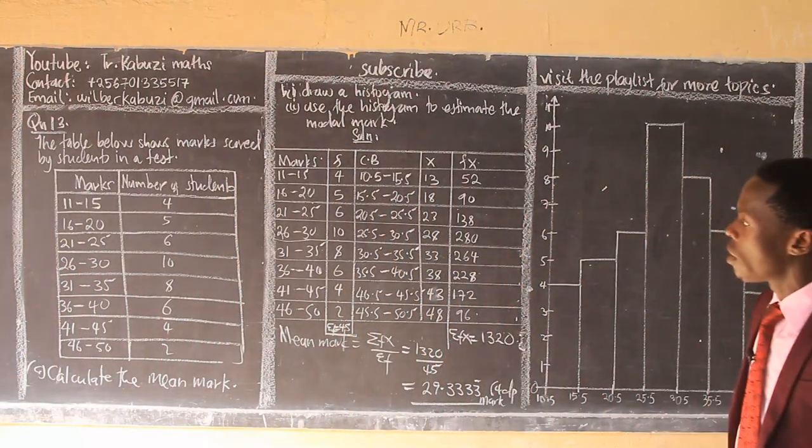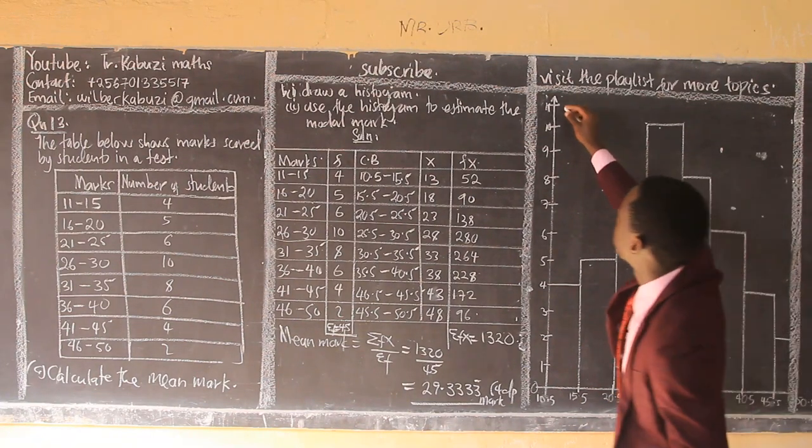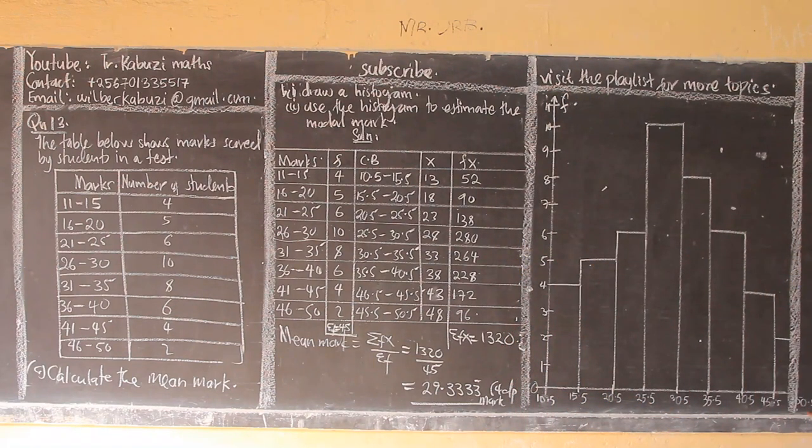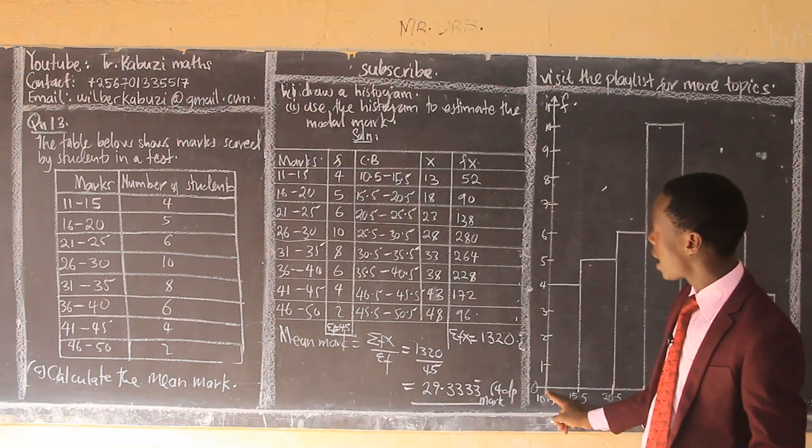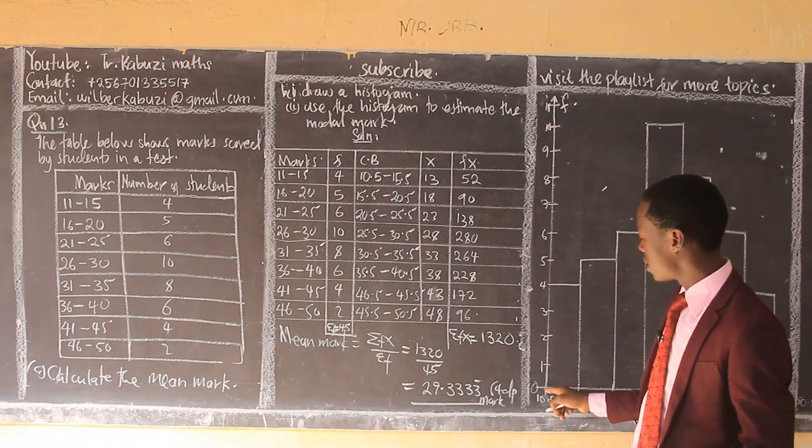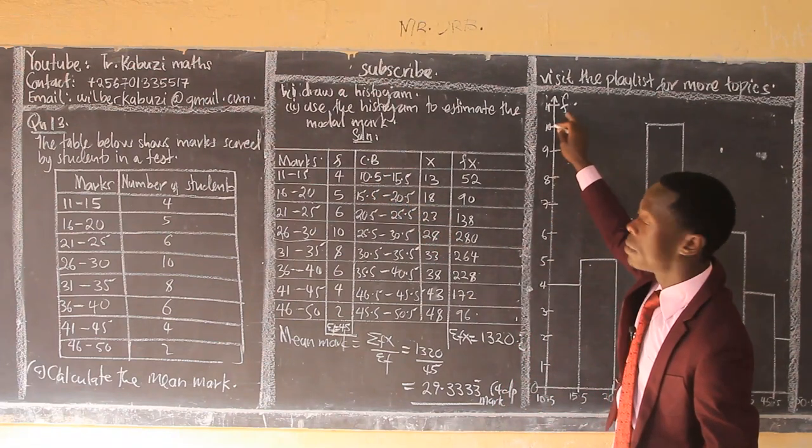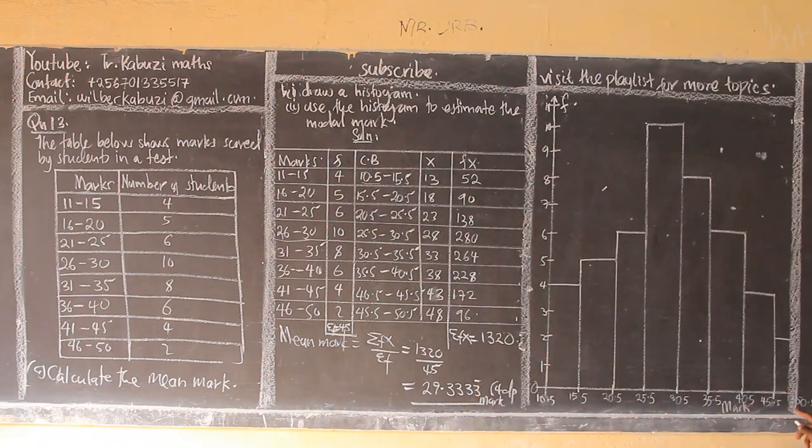Now, they want us now to draw a histogram. To draw a histogram, what I do, we always put frequency here. We put our frequency there. Then we put here the marks. So now after doing that, we put now the 10.5 comes here. The lower class. We start here by lower class. Some people start with the 15, but it's always better you start with the lower class here. Then here we put our frequency. So when we have marks here, they are going to be dense on our horizontal there.